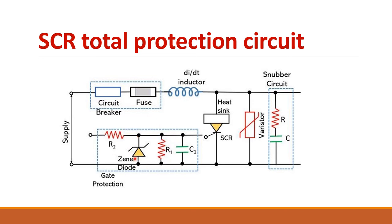There is one more circuit — for gate protection. A capacitor or Zener diode is used to regulate and maintain the voltage at the gate, and resistors are used to limit the current through the gate.